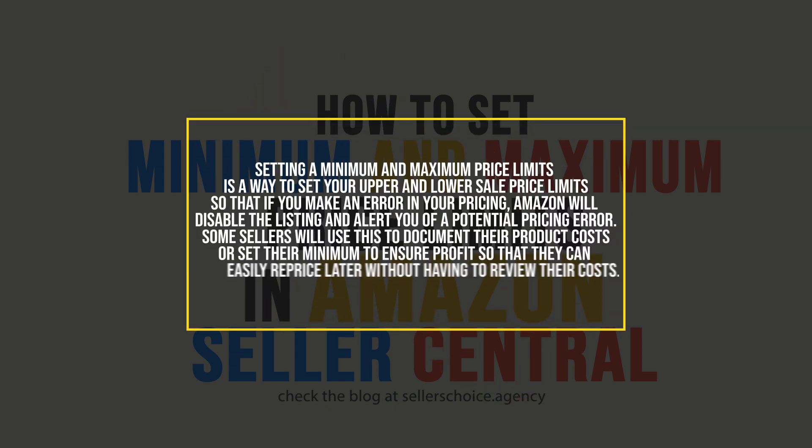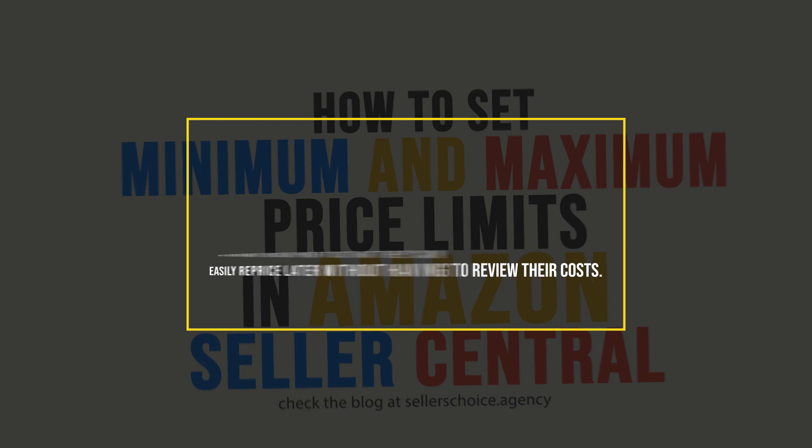Setting minimum and maximum price limits is a way to set your upper and lower sale price limits so that if you make an error in your pricing, Amazon will disable the listing and alert you of a potential pricing error. Some sellers will use this to document their product cost or set their minimum to ensure profit so that they can easily reprice later without having to review their costs.